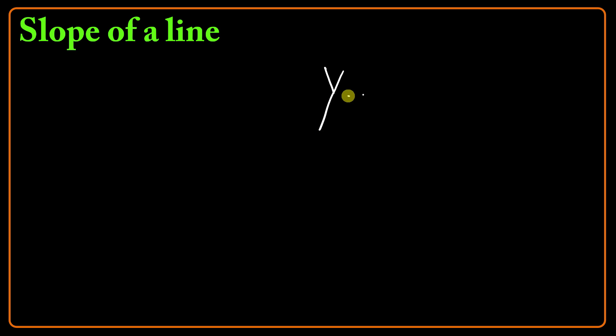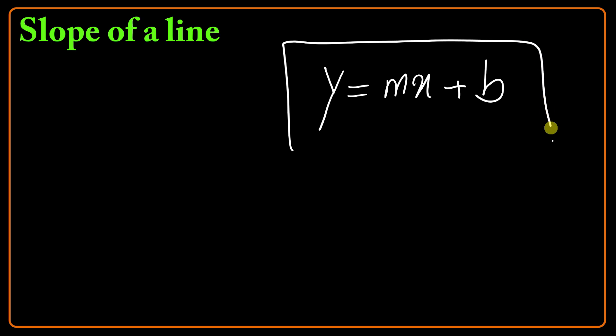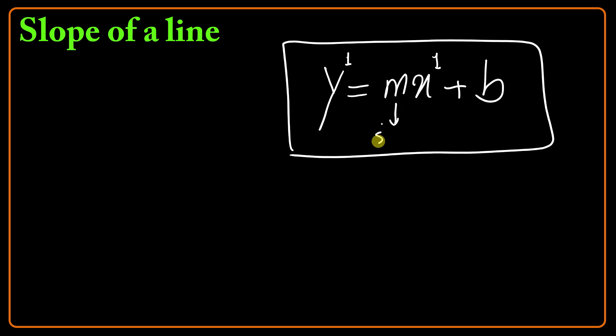How could we define the slope of a line? A line may have an equation like y equals mx plus b, which is named the explicit equation. The exponent of x must be 1, and the exponent of y must also be 1 to define a linear equation. m is the slope of the line, and b is the y-intercept.